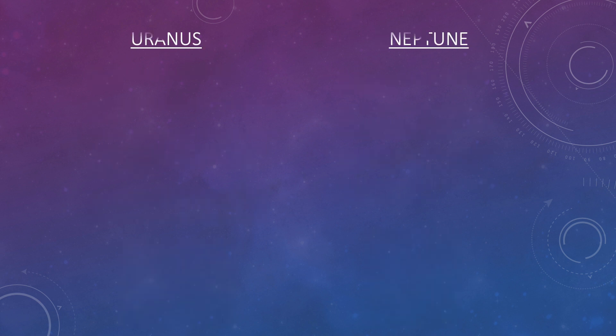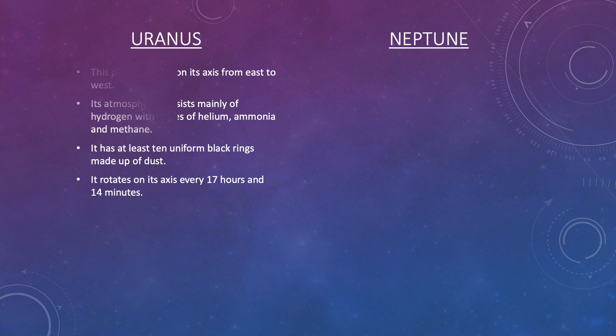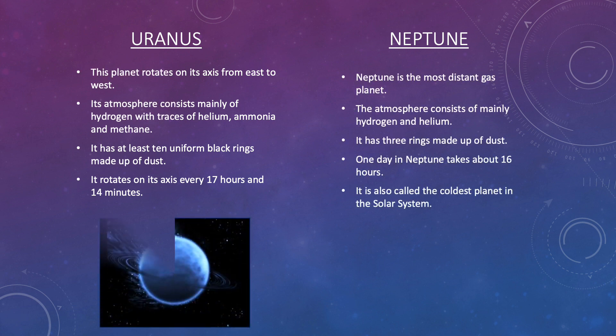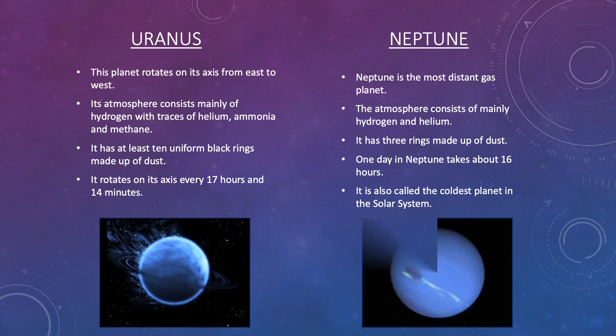Uranus and Neptune. Uranus rotates on its axis from east to west. Its atmosphere consists mainly of hydrogen with traces of helium, ammonia and methane. It has at least 10 uniform black rings made up of dust. It rotates on its axis every 17 hours and 14 minutes.